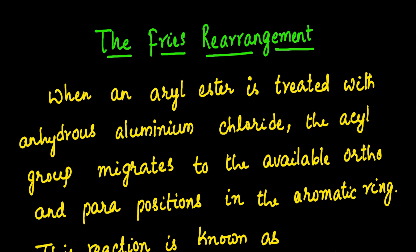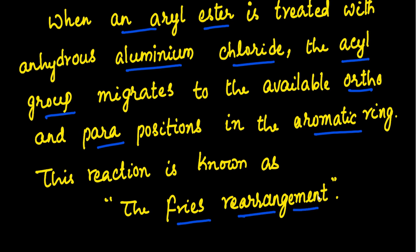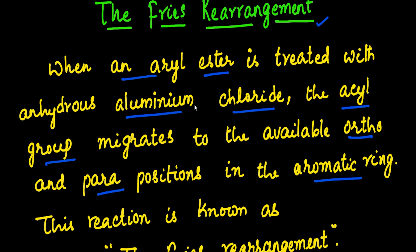Hello guys, welcome back. In this video today we are going to discuss the Fries rearrangement. The definition is: when an aryl ester is treated with anhydrous aluminum chloride, the acyl group migrates to the available ortho and para positions of the aromatic ring. This reaction is known as the Fries rearrangement.